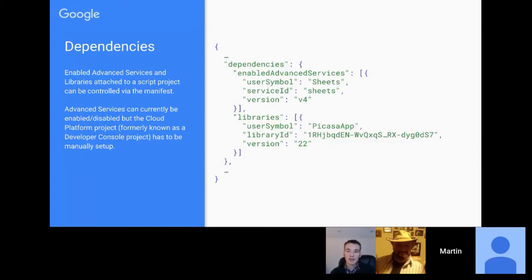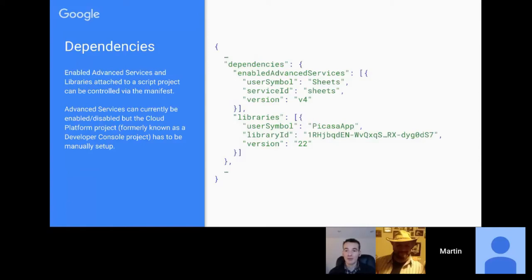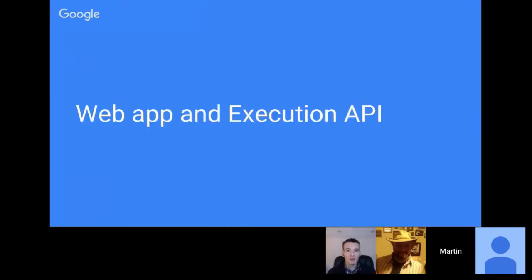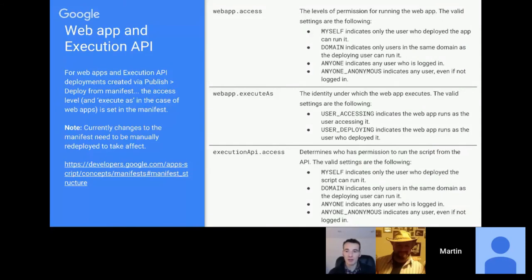Libraries are slightly different because generally there's no console project set up for them. One of the most useful options in the manifest is specifying libraries in script projects and doing things like updating the version number of a library — which I think will be the most useful feature. I've got an example coming up that we'll go through.